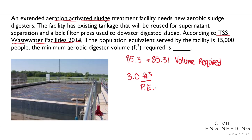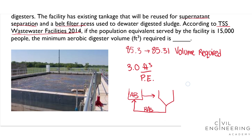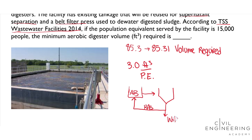We're going to use this conversion factor because if we look in the paragraph above this table, it will have specifications about the supernatant separation and belt filter press situation. If you don't know what supernatant separation is, that's pretty much just a clarifier. Drawing a quick schematic of a wastewater treatment plant: we have the aeration basin, which goes to a secondary clarifier. We get return activated sludge going back into the aeration basin, waste activated sludge coming out, and the clear water keeps going. That's the separation. The belt filter press is what we use to further treat the waste activated sludge.